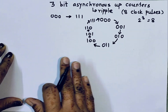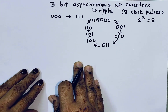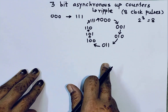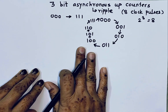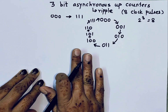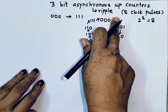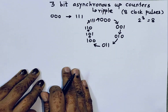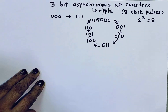We can design counters using either JK flip-flops, T flip-flops, or toggle flip-flops. Here I will show you how to implement a 3-bit asynchronous up counter using a JK flip-flop. For that, we need to understand how a JK flip-flop works.